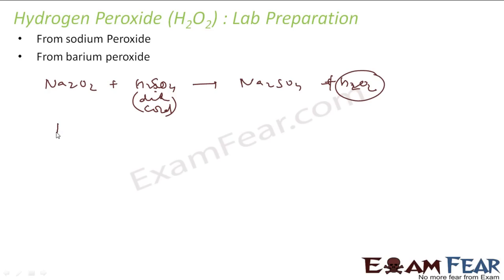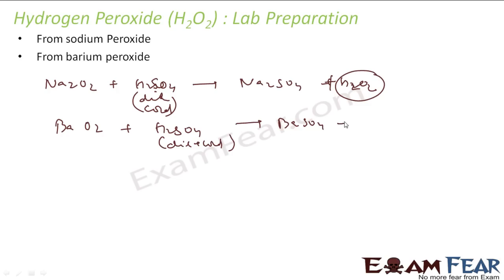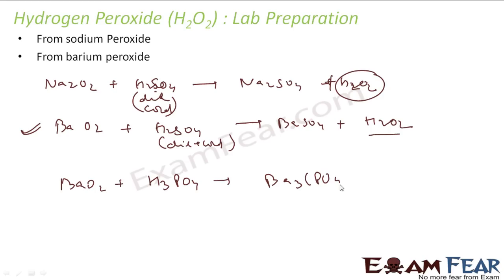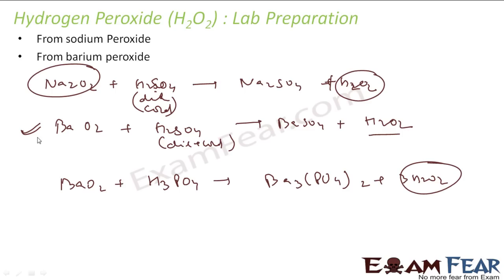The second lab method uses barium peroxide (BaO₂). Reacting BaO₂ with dilute, cold H₂SO₄ gives BaSO₄ and H₂O₂, but the quality is not very good. Alternatively, you can use phosphoric acid (H₃PO₄) instead, which gives better quality H₂O₂. So in the lab, you can use either sodium peroxide or barium peroxide, with H₂SO₄ or H₃PO₄.